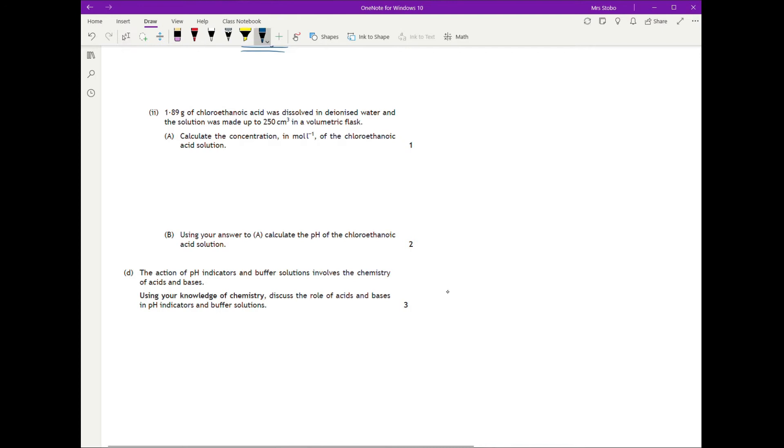Right, we've got a calculation. So 1.89 grams of chloroethanoic acid was dissolved in deionized water. A solution was made up to 750 in a volumetric. You've got to calculate the concentration, and then we've got to calculate the pH. So concentration in moles per liter is reasonably easy. We've got 1.8 grams of your CH2ClCOOH. Go off and do the formula mass of this. So I'm assuming we can work a formula mass reasonably well. We should have 94.5.